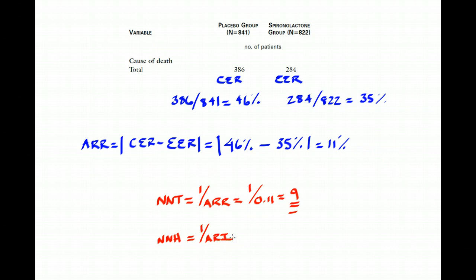I calculate the rate of the bad event in the spironolactone group, that becomes my experimental event rate. I calculate the outcome of the bad event in my placebo arm, and I plug it into this formula. It will tell me the number needed to harm.